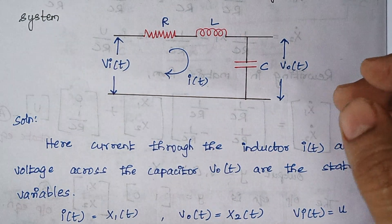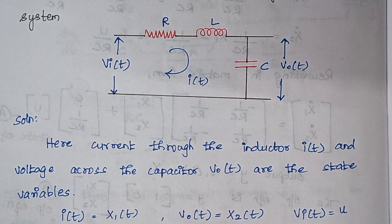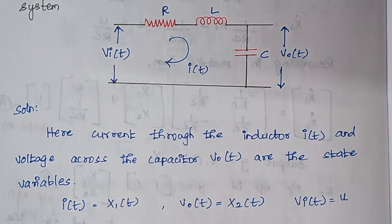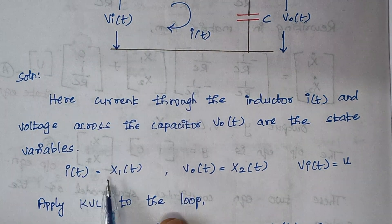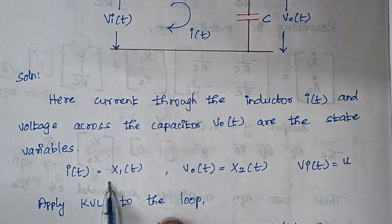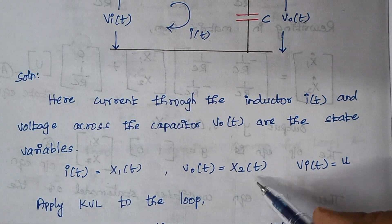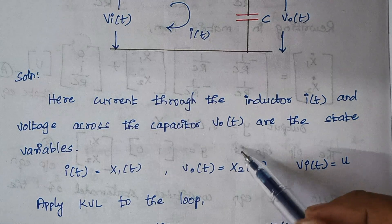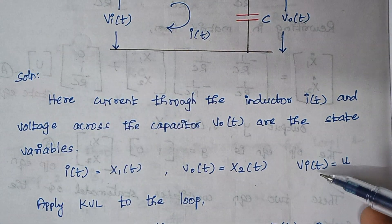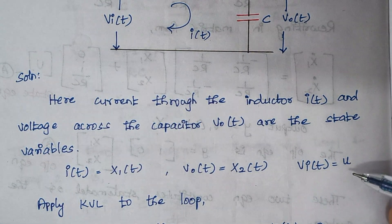These two factors are considered as state variables. So I(t) is equal to x1(t) and V0(t) is taken as x2(t), and as we all know, input is always represented as u.